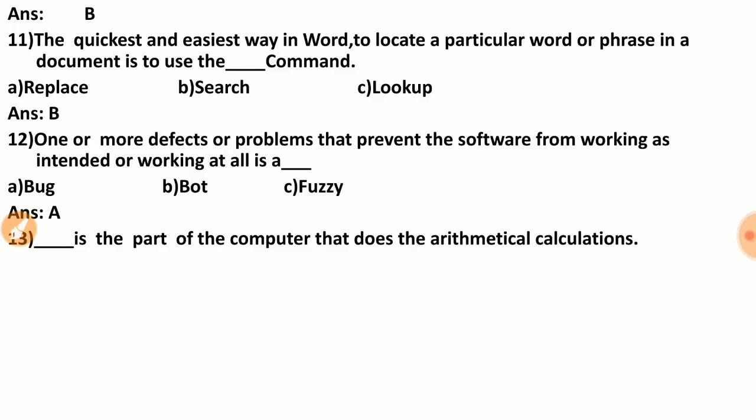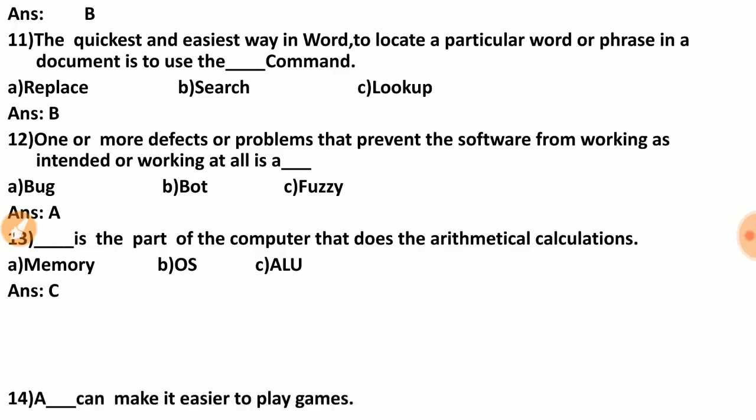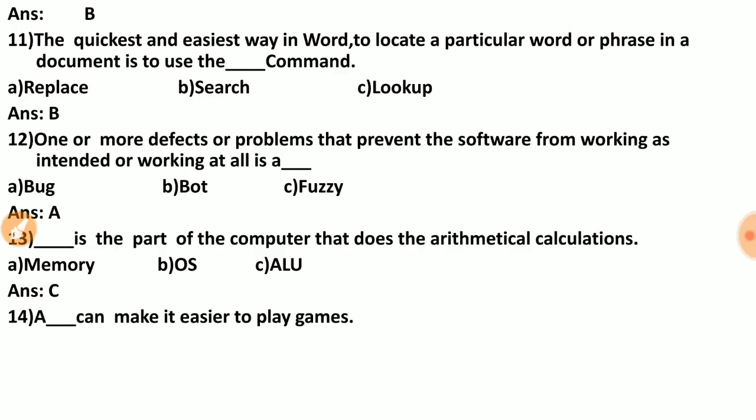Question thirteen: a dash is the part of the computer that does arithmetical calculations. Options are: memory, OS, ALU. The correct answer is C — ALU, which stands for Arithmetic Logic Unit. It performs arithmetical calculations.